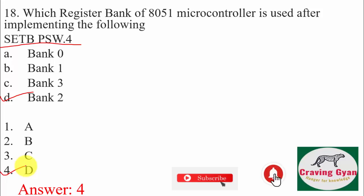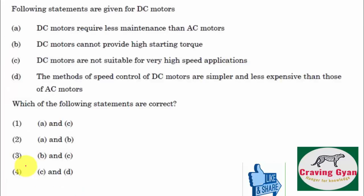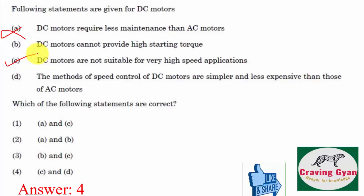Next question: statements given with respect to DC motors — find the correct options. Statement A: DC motors require less maintenance than AC motors — wrong. Statement B: DC motors cannot provide high starting torque — wrong. Statement C: DC motors are not suitable for very high speed applications — yes, for high speed we use AC motors. Statement D: the method of speed control of DC motors is simpler and less expensive than that of AC motors — also correct. So options C and D are correct, hence option number 4 is going to follow.